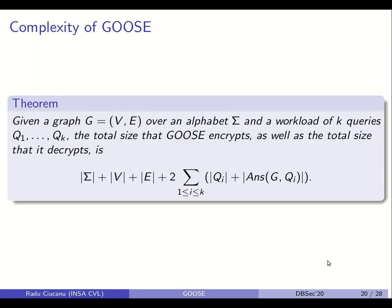Regarding the complexity of GOOS, by counting messages exchanged between participants during outsourcing and evaluation, we observed that the total size of encrypted and decrypted messages is linear in the size of the output — the size of the graph plus the size of the queries plus the size of the query answers.